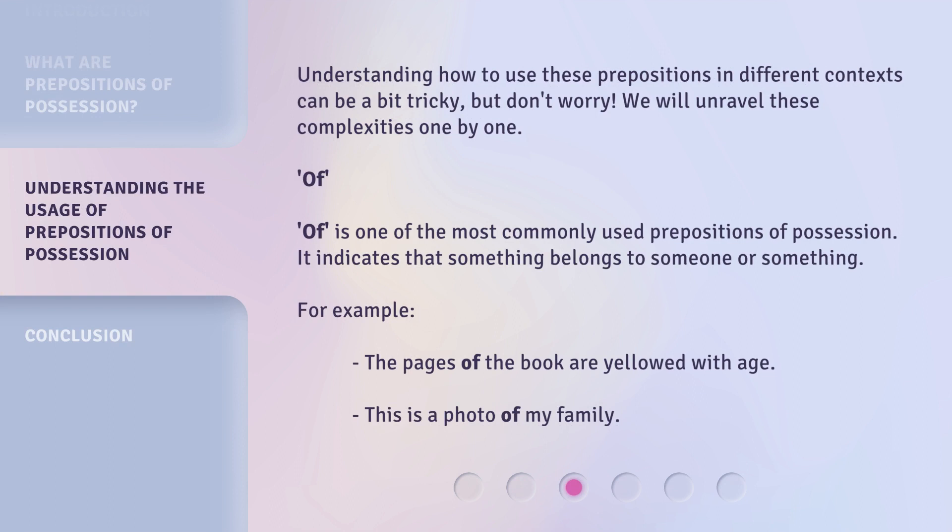Understanding how to use these prepositions in different contexts can be a bit tricky, but don't worry — we will unravel these complexities one by one. "Of" is one of the most commonly used prepositions of possession. It indicates that something belongs to someone or something. For example: the pages of the book are yellowed with age; this is a photo of my family.